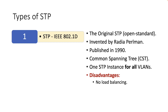Why? Because there can be use cases in which the best path to reach a VLAN is different than the path obtained on electing the root bridge. Furthermore, the original STP can take 30 to 50 seconds to respond to a topology change.